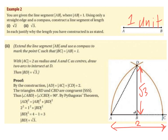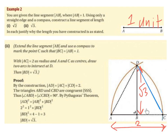Triangles ABD and CBD are congruent — they have three equal sides and three equal angles, and are in fact reflections of each other. Therefore the angle ABD equals the angle CBD. Since together they form the straight line AC, and the triangles are congruent reflections, both angles equal 90 degrees. So we have a right-angle triangle on the left and a right-angle triangle on the right.